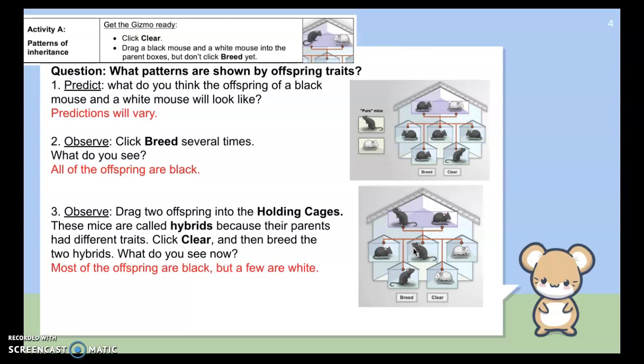And so in part A of this activity, it says what patterns are shown by the offspring's traits. So in this situation, it says predict what you think the offspring of a black mouse and a white mouse would look like. So everyone probably had different predictions, but then it asked you to click and drag those parents over. So you have a black mouse and a white mouse. And when you hit breed, here's your offspring. You'll notice that all of the offspring were black. The phenotype, the physical appearance is black.